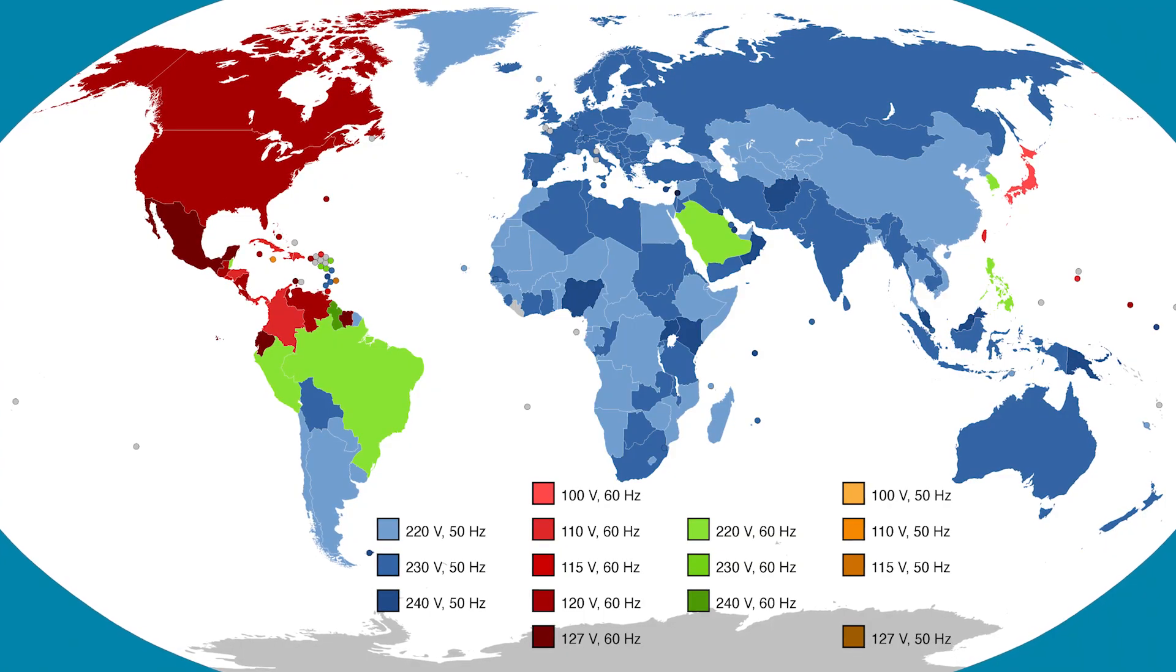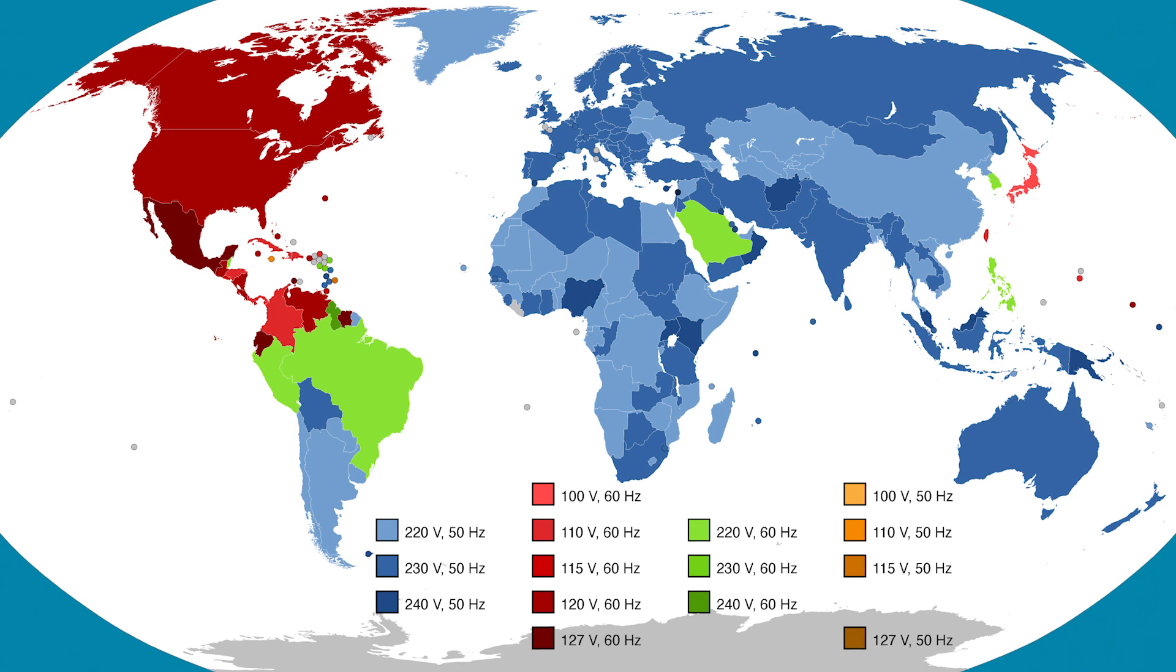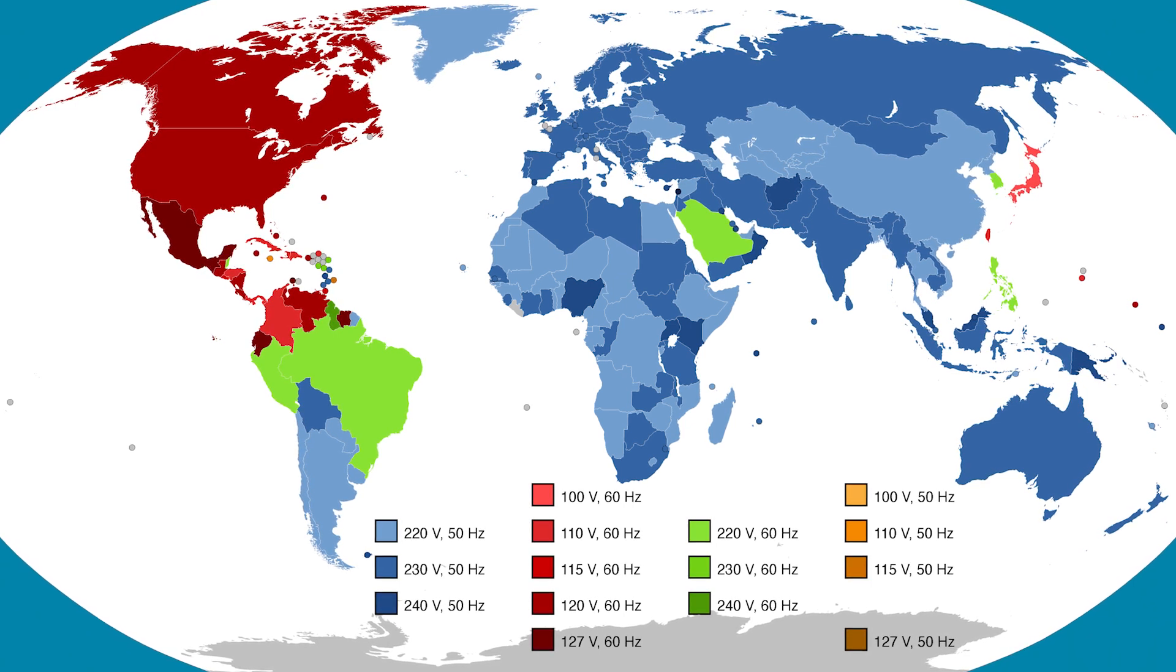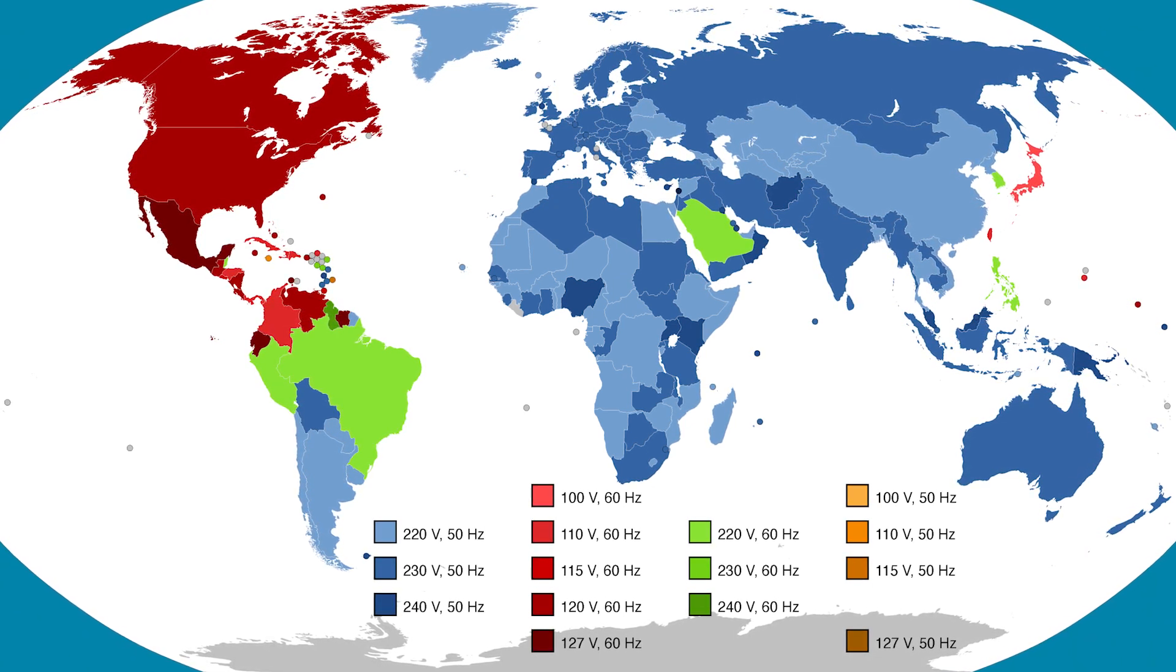As we learned in the last lesson, transformers require alternating current to work. And the most available AC we have is the mains AC you get by plugging something into your wall. Depending on what country you're in, that can be anywhere from 110 to 240 volts. That's some spicy power you don't want to mess around with. I spent about a week trying to find a good project that uses transformers that's safe to interact with and kept coming up with nothing, because I'm a scaredy cat and don't want to play with mains AC.